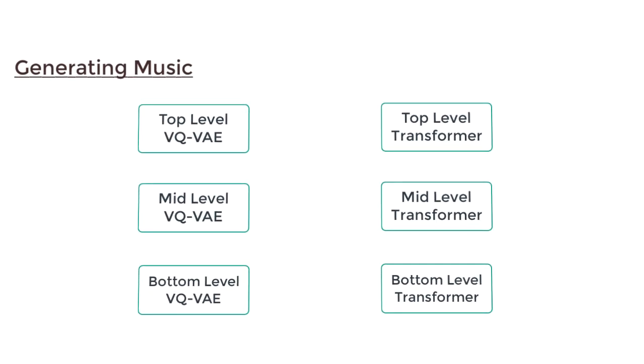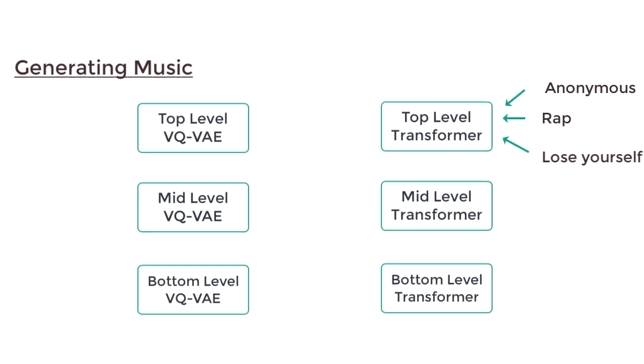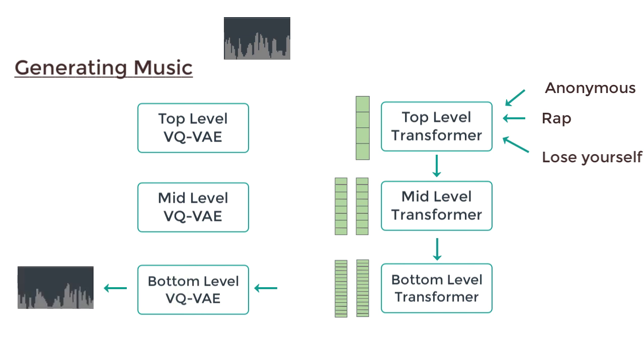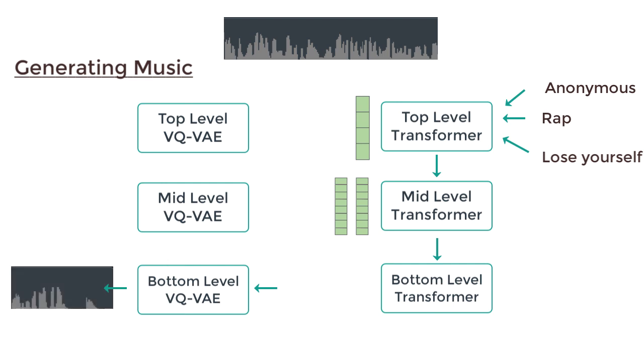Sweet! So now, during generation time, we would get lyrics, genre, and artist information all encoded into vectors, pass it to our top-level transformers to get a very compressed representation. Pass each of these to the mid-level transformer to decompress, and pass each of these to the bottom-level transformer to further decompress, and then pass each of these vectors to the bottom-level VQVAE decoder to generate audio chunks. Stitch them together, and we get new music.